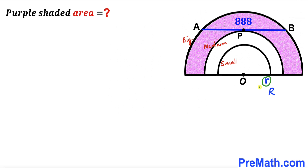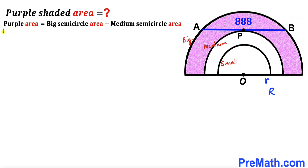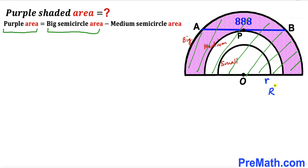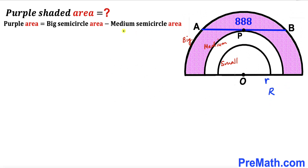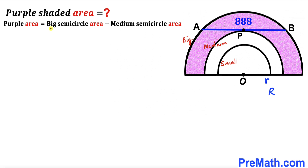We can see that this chord AB is only interacting with the big semicircle and the middle one. So therefore, we are going to ignore the smallest semicircle. The purple shaded region area is equal to the area of the big semicircle (radius uppercase R) minus the area of the medium semicircle (radius lowercase r).